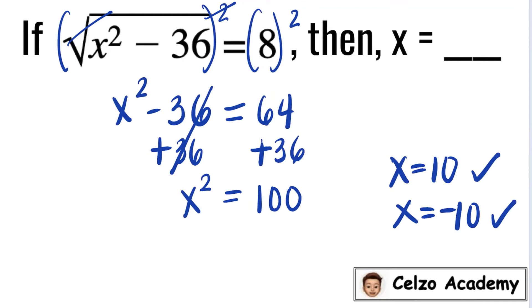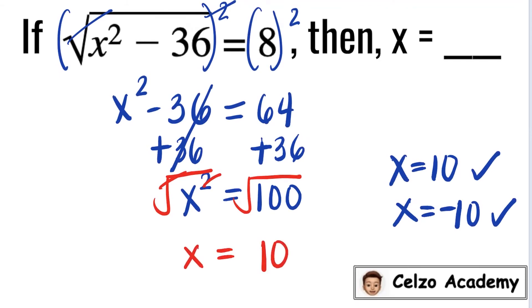Solving for x, we need to take the inverse operation for square, which means we need to take the square root of both sides. The square and the square root will cancel out, so it's just going to be x. The square root of 100 is 10. The value of x in this problem will be positive 10 and negative 10, because when you substitute 10 or negative 10, the equation will be true.